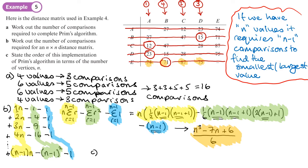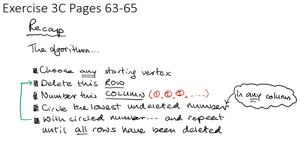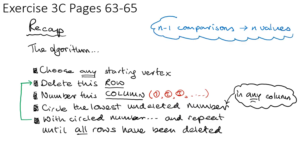Part c asks for the order of this implementation. The highest power in the formula is n cubed, so the order is O(n³). You should now be able to complete exercise 3c on pages 63 to 65. A key fact to remember is that n − 1 comparisons are needed to compare n values. Make sure you know how to implement and use Prim's algorithm on a distance matrix.